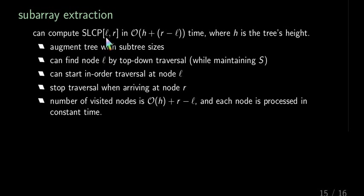Now during this traversal, we find this node L, so the starting position. And also during this traversal, we maintain the stack S. So having found this node L, we can start an in-order traversal at this node L and stop this traversal when we reach the node R. And maintaining this stack during this traversal takes constant time per node. And the number of visited nodes is in relation to H plus the length of this interval or the number of nodes we visit. And because the tree navigation also takes constant time per node, we get the claimed bound.